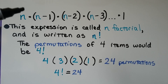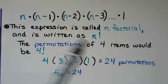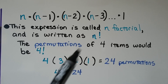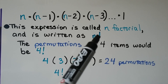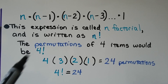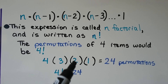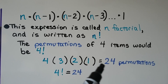This expression is called n factorial, and it's written as an n with an exclamation point. We read this as n factorial. The permutations of four items would be four factorial — four times three times two times one — slowly getting down to one, which would equal 24 permutations. So four factorial is equal to 24.